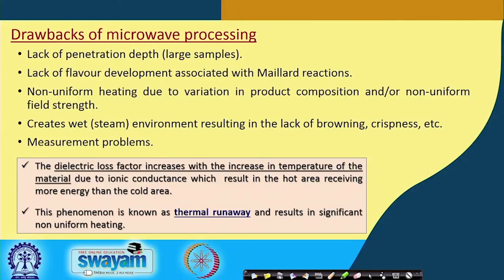There are also measurement problems: although fiber optic cables can measure temperature, it sometimes becomes difficult to insert the probe into the cavity without loss of microwave energy. Another important drawback is that the dielectric loss factor increases with increasing temperature due to ionic conductance, resulting in hot areas receiving more energy than cold areas. This phenomenon, known as thermal runaway, results in significant non-uniform heating.